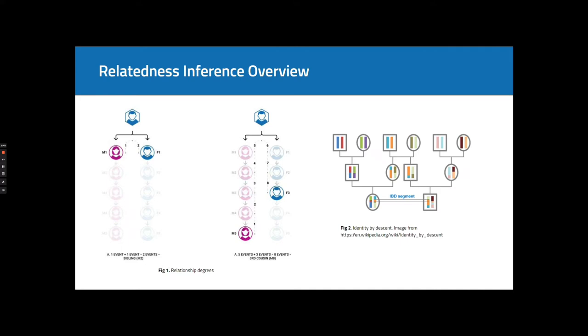So, in a nutshell, we are predicting relationship degree for a given pair of samples using their genetic data.